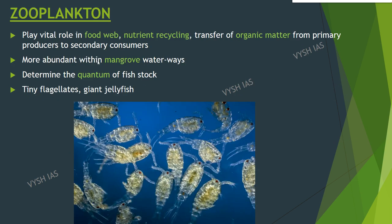Zooplankton: They play a vital role in the food chain, nutrient recycling, and in the transfer of organic matter from primary producers to secondary consumers. They are more abundant within mangrove waterways than in coastal places. A large proportion of the mangrove habitat organisms are zooplanktivorous and they determine the quantum of fish stock. Examples include tiny flagellates and giant jellyfish.